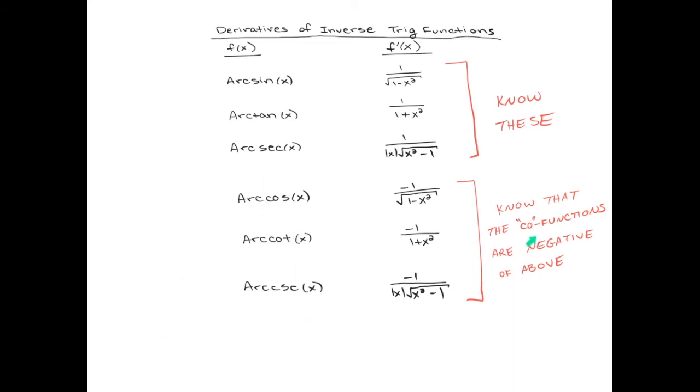And now what you need to remember is that the other three formulas, the co-versions or the co-functions, cosine, cotangent, and cosecant, are the same as the first three, except you add a minus sign in front. So add this onto your list of derivatives. You should know all of these derivatives from this point forward in the course.